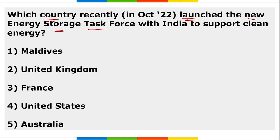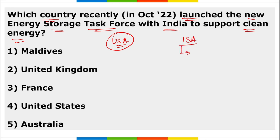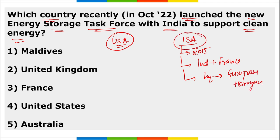Which country recently launched a new energy storage task force with India to support clean energy? It was the United States of America. Remember, the International Solar Alliance was launched in 2015 as a joint initiative between India and France, headquartered in Gurugram, Haryana. The US also joined the ISA. Under the Strategic Clean Energy Partnership (SCEP), the US and India launched a new energy storage task force to support large-scale integration of renewable energy.